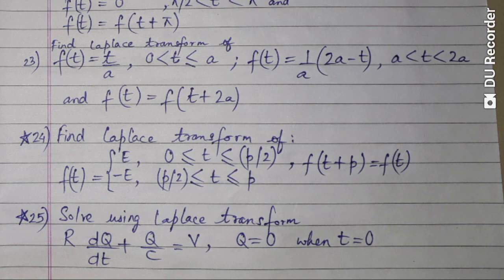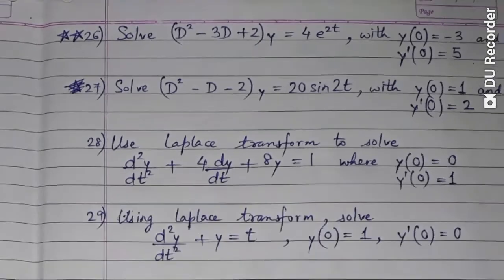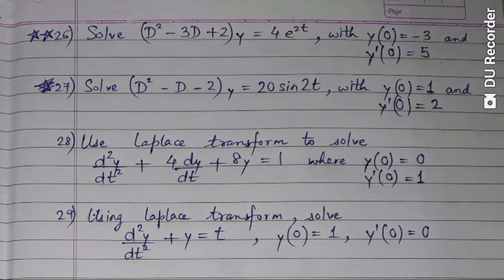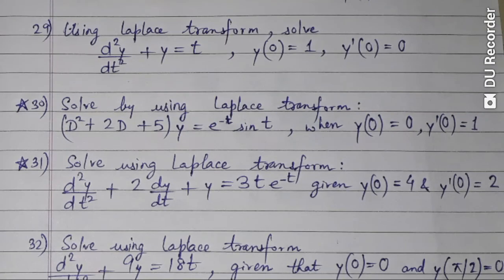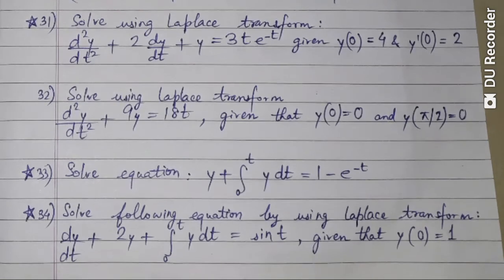Question number twenty-three, twenty-four, and twenty-five. Question number twenty-six is marked with a double star, meaning it was asked in the question papers of 2017 and 2018 after the syllabus was revised. Then questions twenty-seven, twenty-eight, twenty-nine, thirty, and thirty-one. Questions thirty and thirty-one are marked with a single star, meaning they were asked from 2014 to 2018.